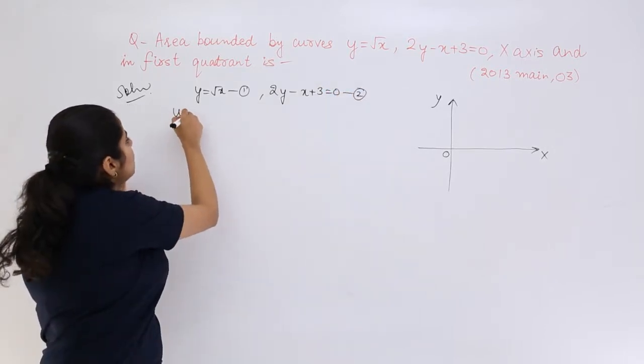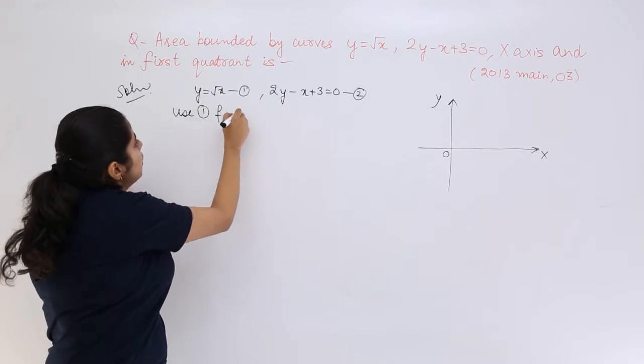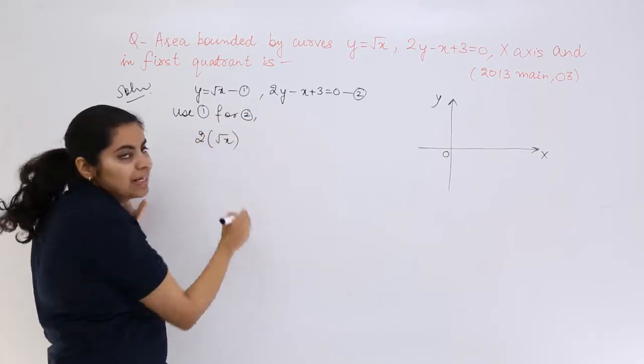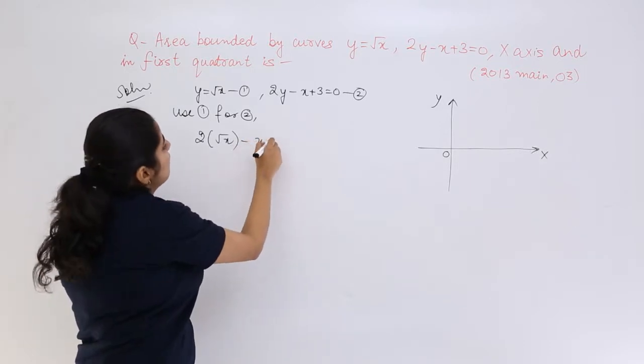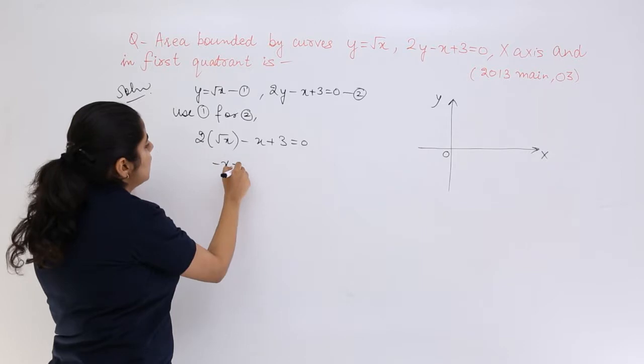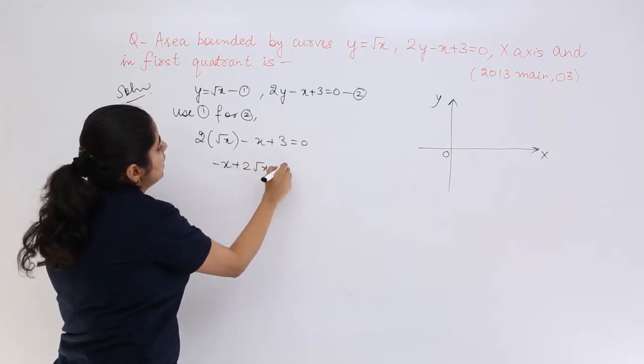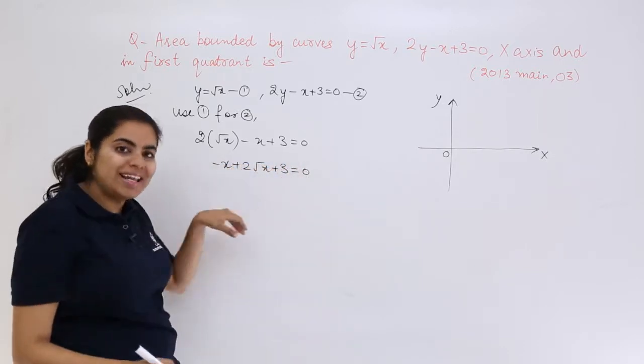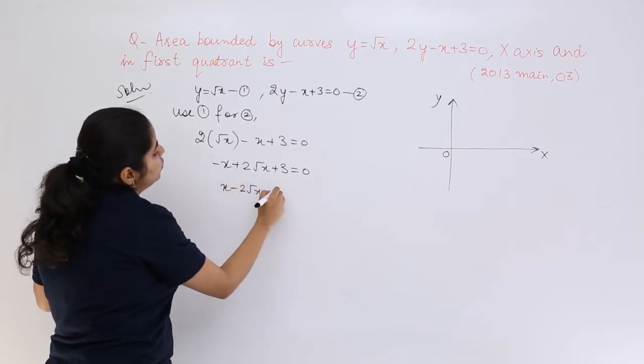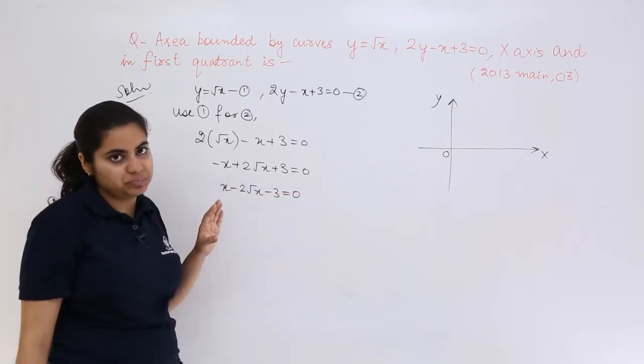Directly I can use equation 1 for 2. So 2 into square root x minus x plus 3 equals 0. It becomes minus x plus 2 root x plus 3 equals 0. Taking minus sign common: x minus 2 root x minus 3 equals 0.